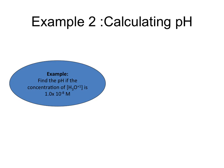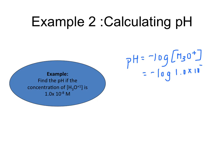Let's take a look at some examples. The first is finding the pH when given the hydronium ion concentration. Remember the equation: pH is equal to the negative log of the hydronium ion concentration. Since they're giving you that value, you just plug it into the equation and use your calculator. Push the negative sign, find the log button, and then enter 1.0e negative 8. Press enter and you should get a value of 8.00.